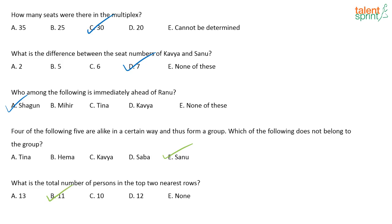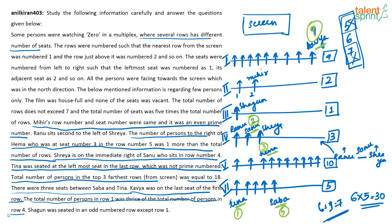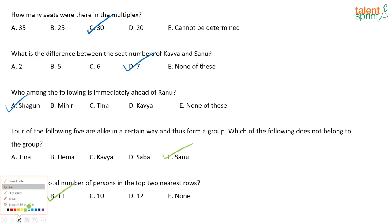What is the total number of persons in the top two nearest rows? The two nearest rows are row 1 with 9 people and row 2 with 2 people. So 9 plus 2 equals 11 people. Note: Hema is in seat number 3, not 4 — that was just how it appeared when written down.